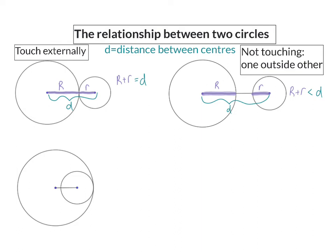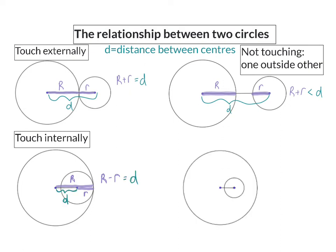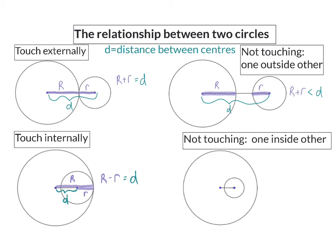Our third sketch shows two circles that touch internally, and here the radius of the bigger circle minus the radius of the smaller circle will be the same length as the distance between the two centers. Our last relationship is two circles that do not touch and the one is inside the other. In this case, the radius of the big circle minus the radius of the smaller circle will be bigger than the distance between the two centers of the circles.